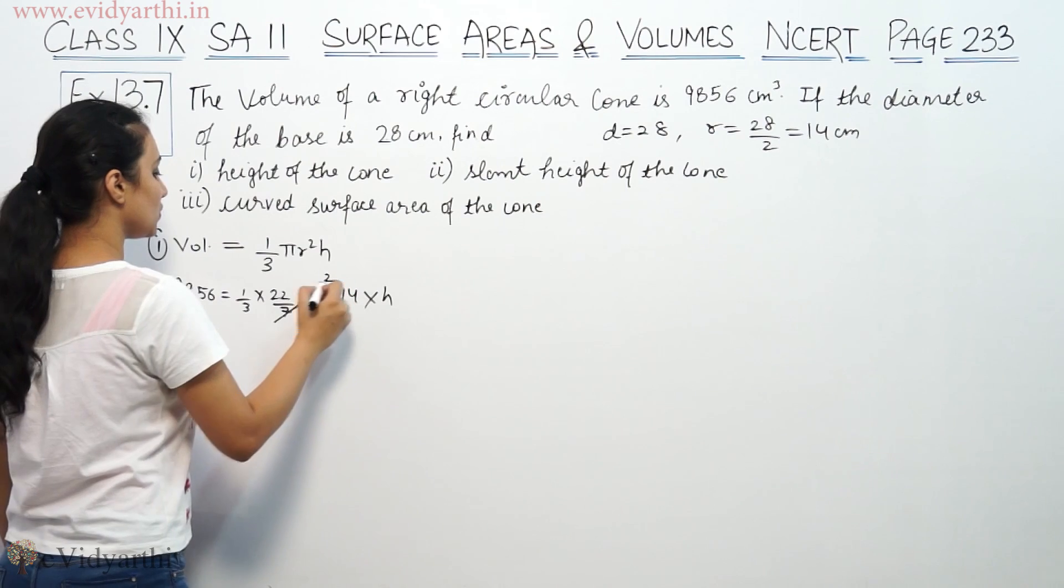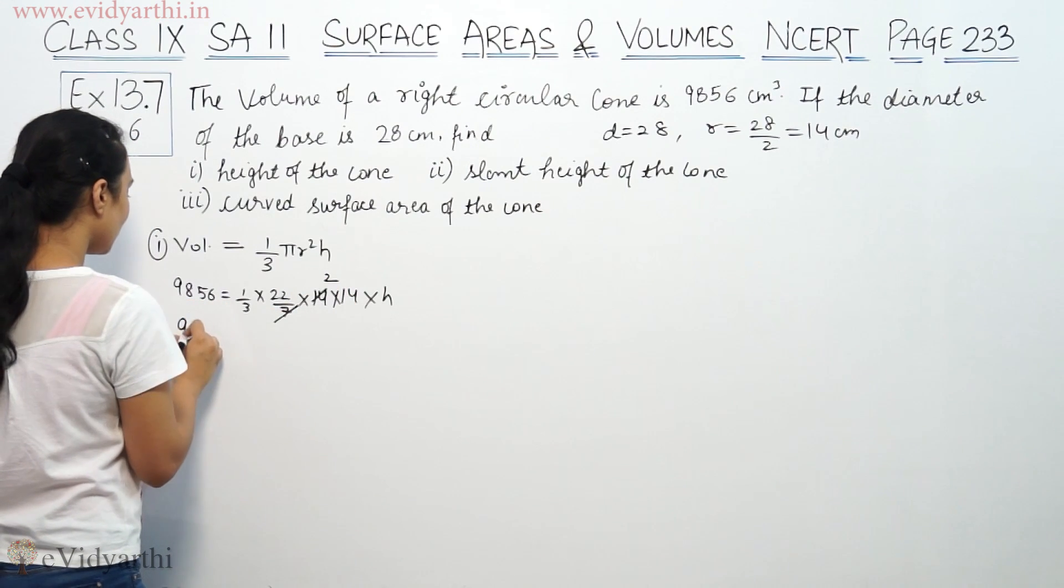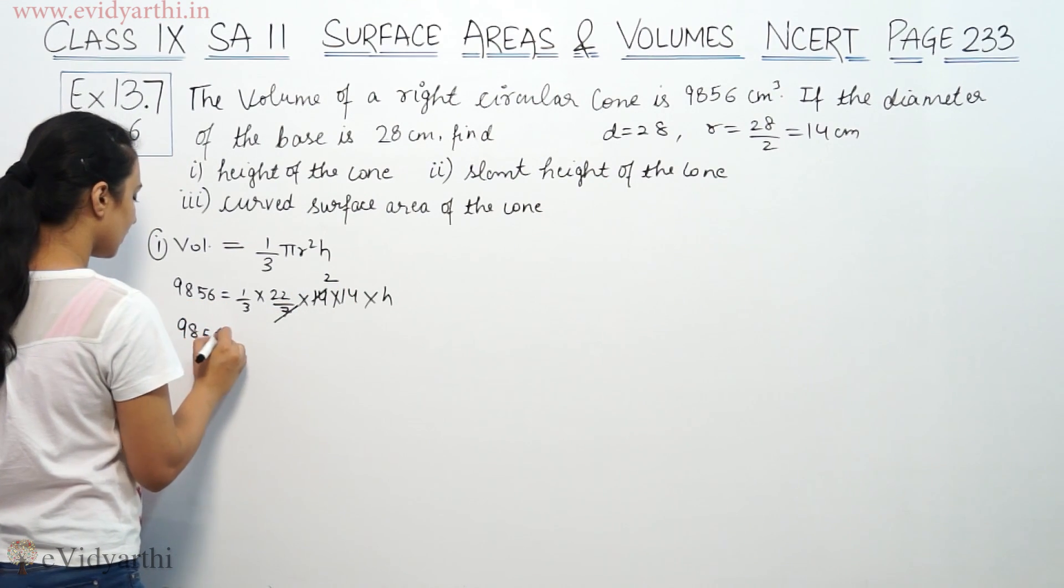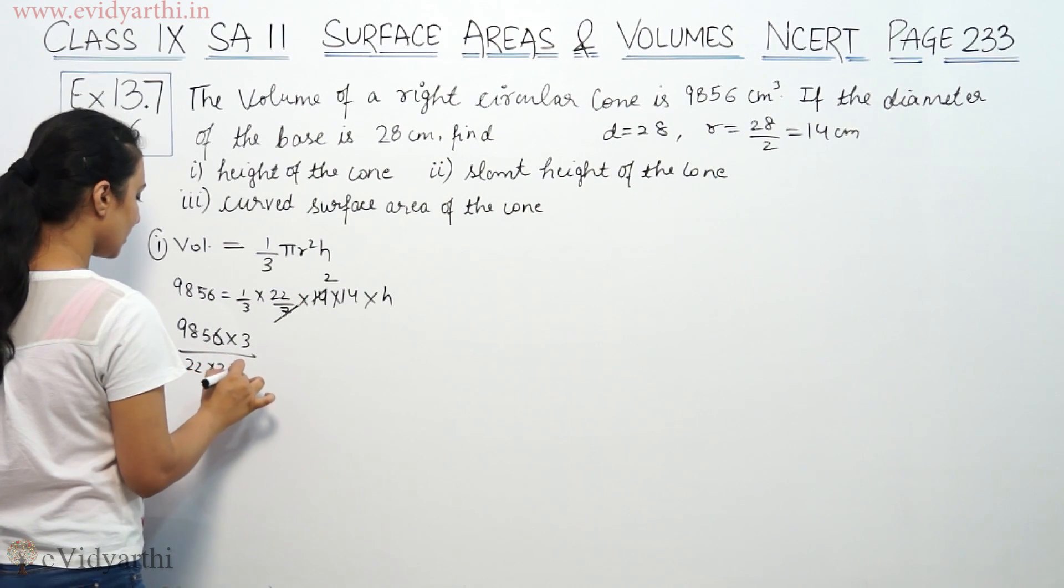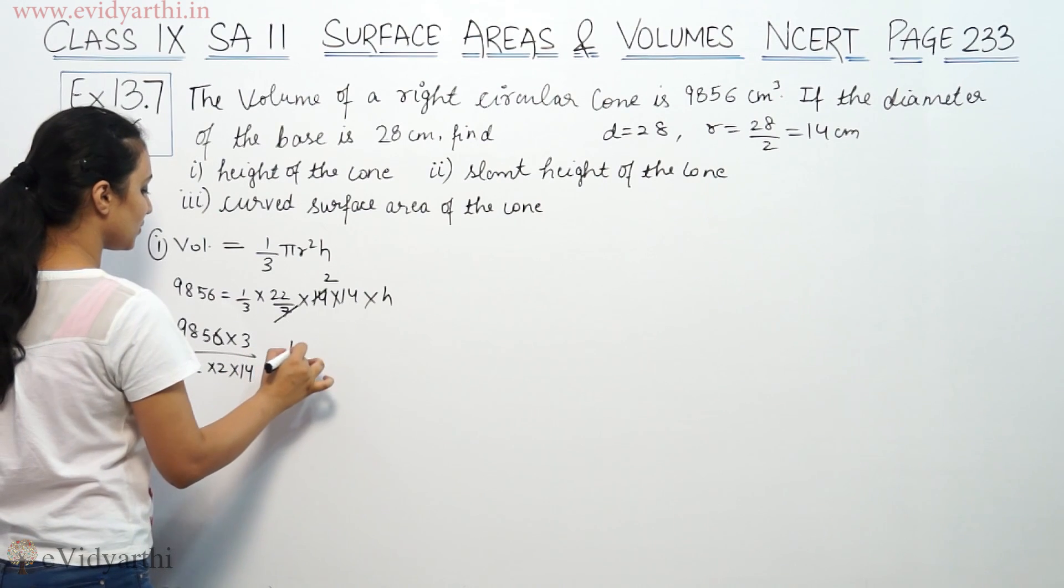So the calculation: 9,856 × 3 divided by 22 × 2 × 14 × 14 is equal to h.